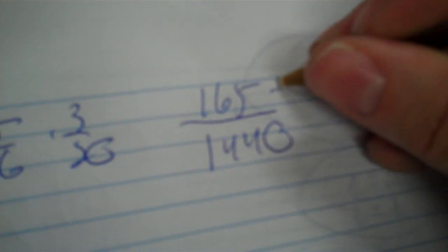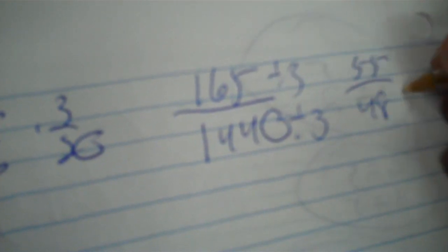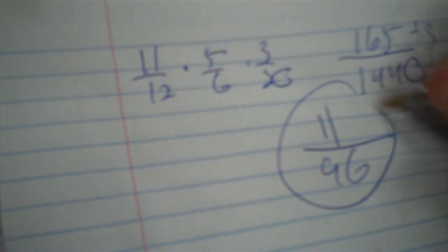11 twelfths times 5 sixths times 3 twentieths. 55 times 3 is 165. 1,440. Well, you can divide by 2. Can you divide by 3? Yep. Which is 55 over 480. 3 won't work. 5 will, because that ends in a 5. That ends in a 0. So, that's 11, which is a prime factor. Over 96. Now, it's reduced, because 96 can't divide by 11. The only way you could reduce the prime factor is if the other number was divisible by that prime factor.